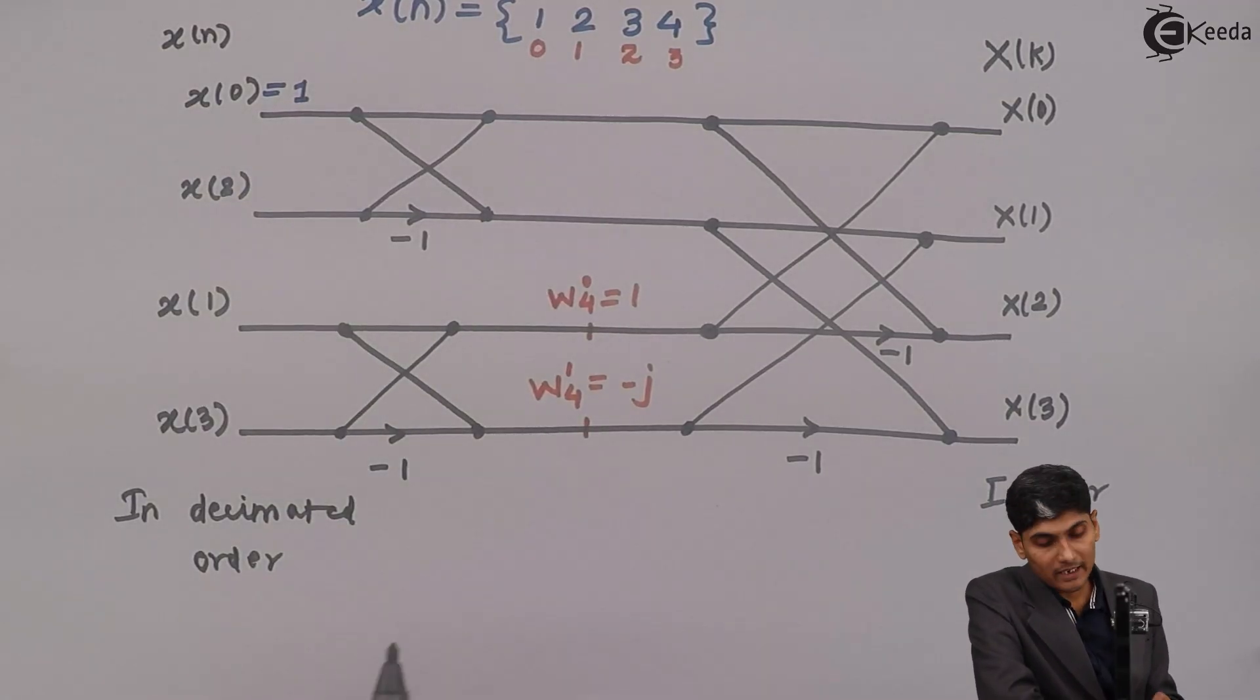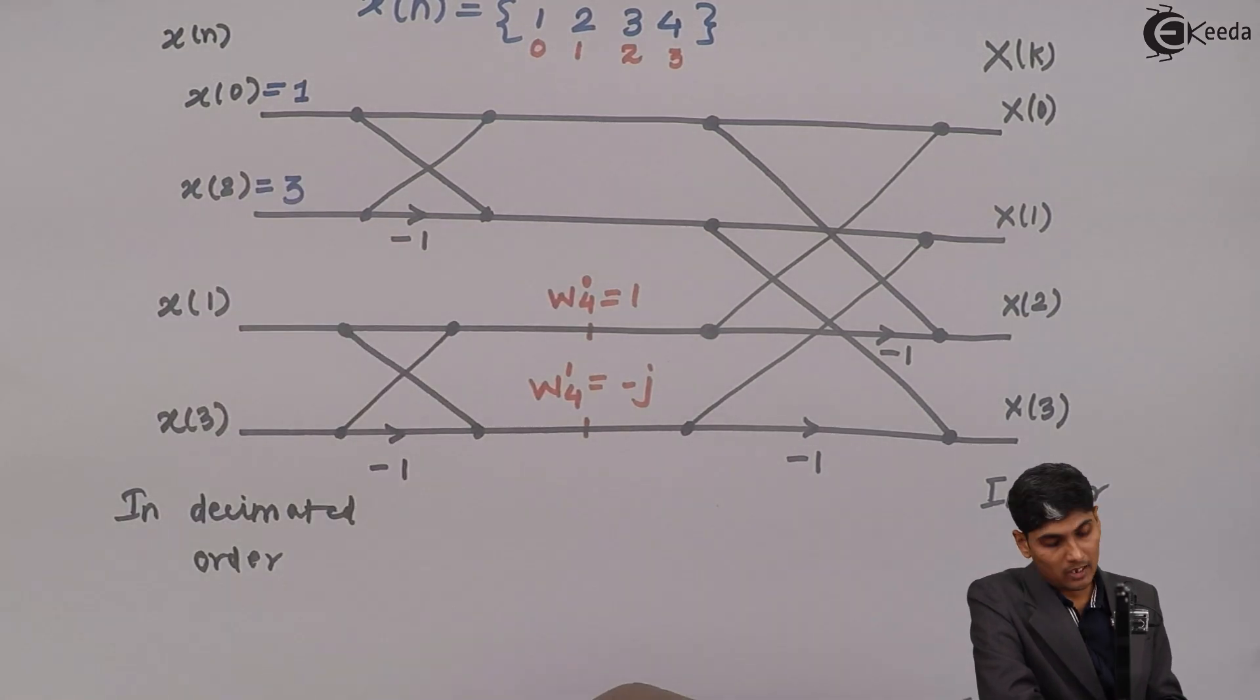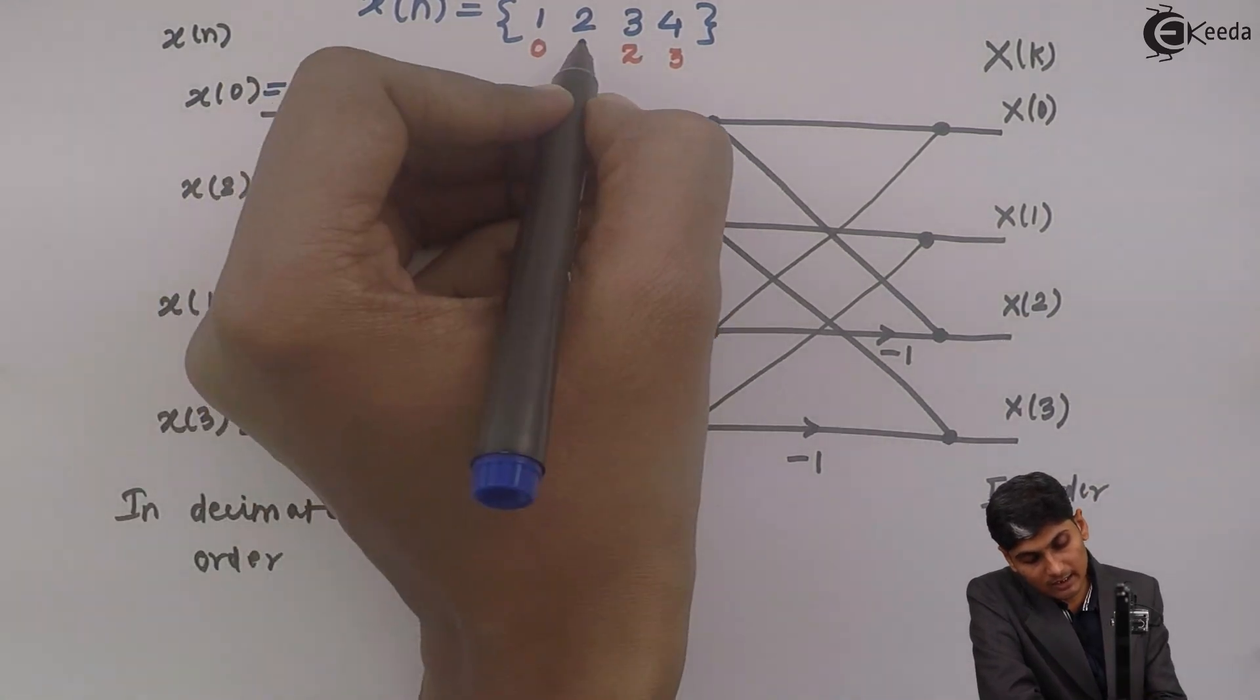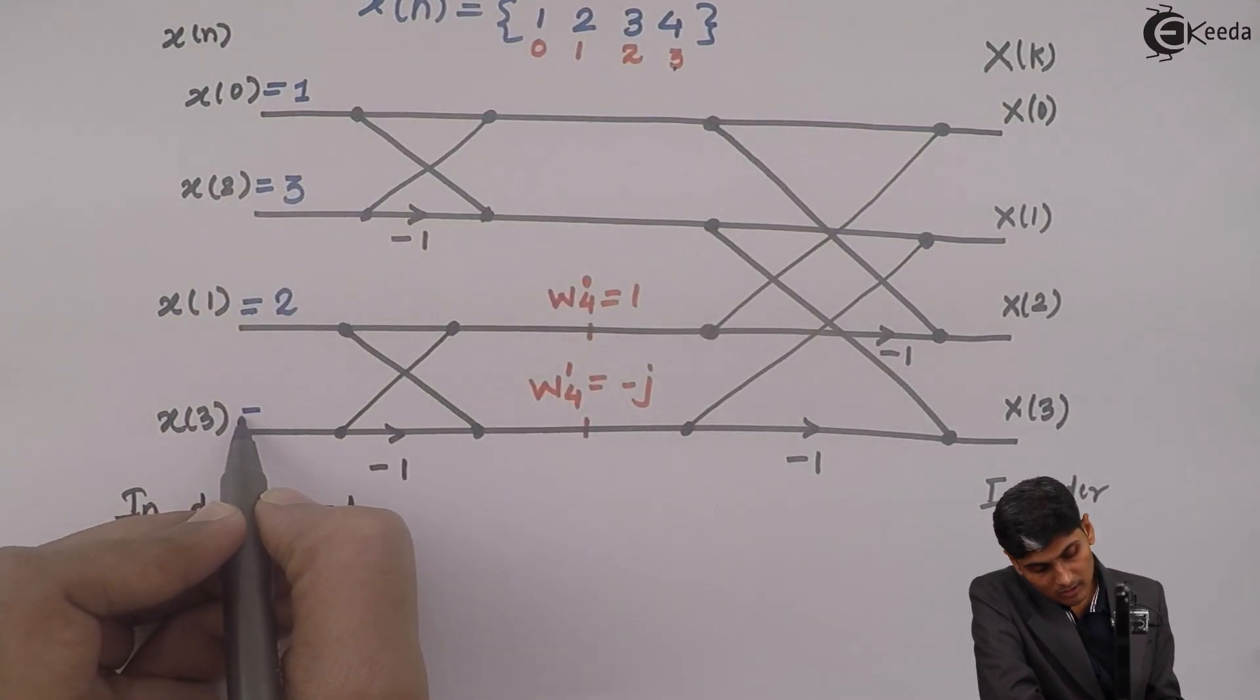Then x of 2, x of 2 is, value is 3, so I will write here as 3. Then x of 1 is nothing but 2, and x of 3 is nothing but 4.